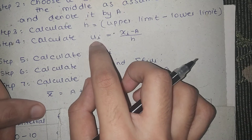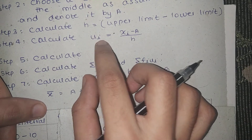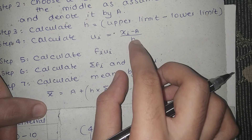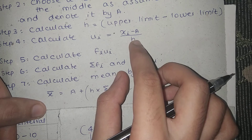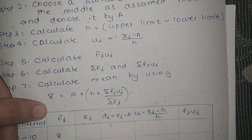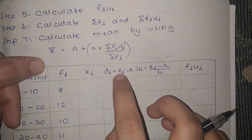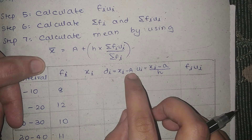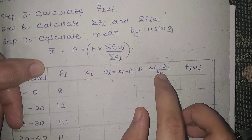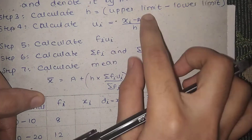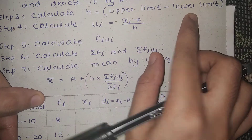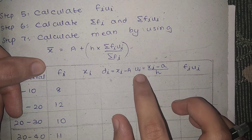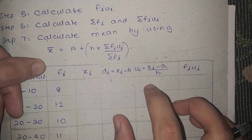ui is the deviation divided by class size. The deviation is xi minus a, divided by class size h. h is upper limit minus lower limit.